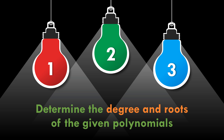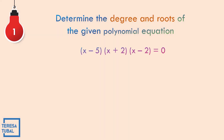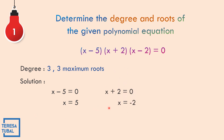Let us determine the degree and roots of the polynomial equation (X minus 5)(X plus 2)(X minus 2) equals 0. The degree is 3 because X times X times X is X cubed, so we have 3 maximum roots. Using the zero product rule: X minus 5 equals 0 gives X equals 5; X plus 2 equals 0 gives X equals negative 2; X minus 2 equals 0 gives X equals 2. So the roots are 5, negative 2, and 2.